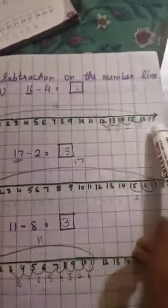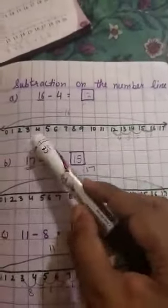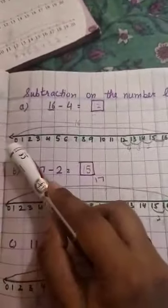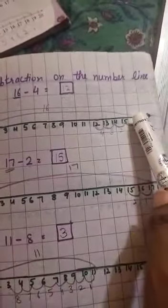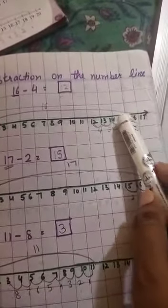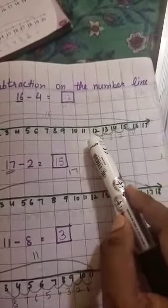Look at here. Make a number line from 0 to 17 or 20. Then first number is 16. We will start with 0 and then we will go on number 16. Then minus 4. We move 4 steps backward. 16, 15, 14, 13, 12. Then we are on the number 12. Then answer will be 12. Look at here. Next question.